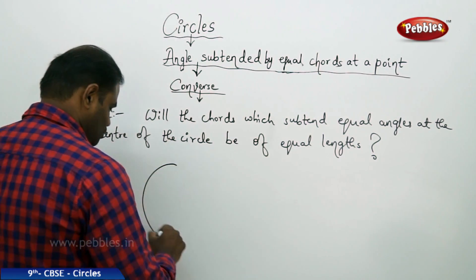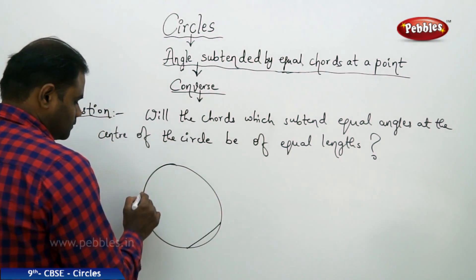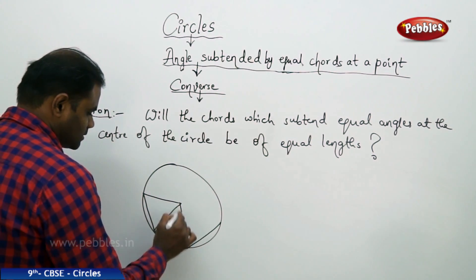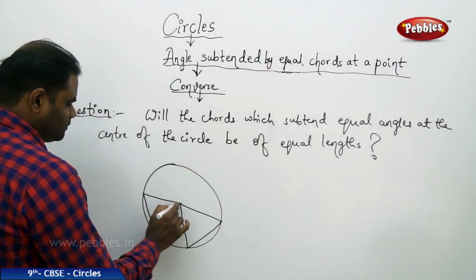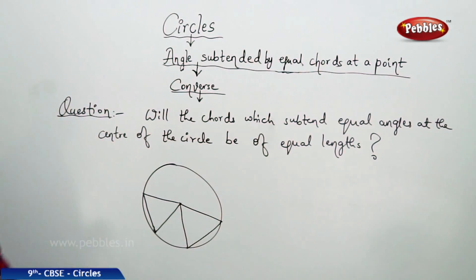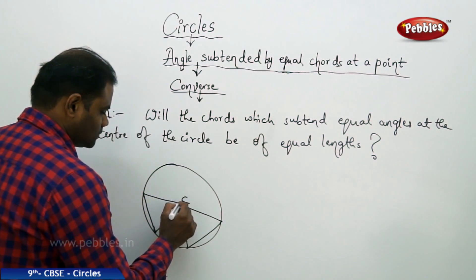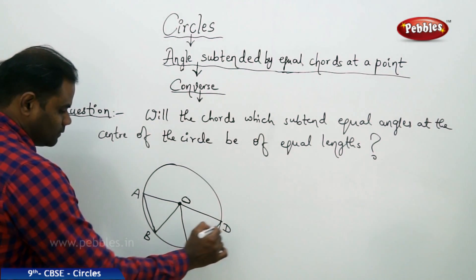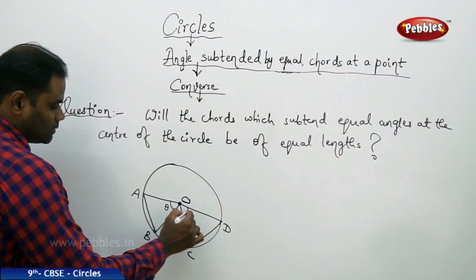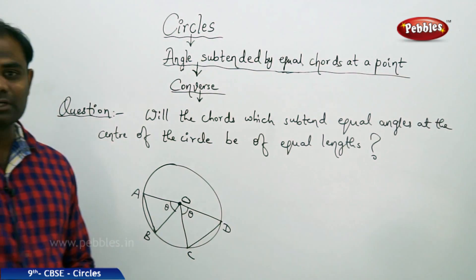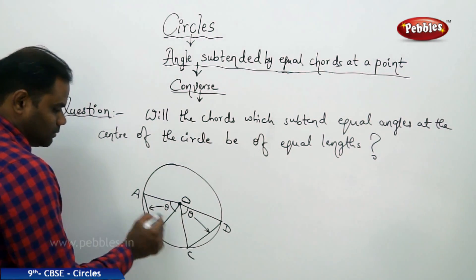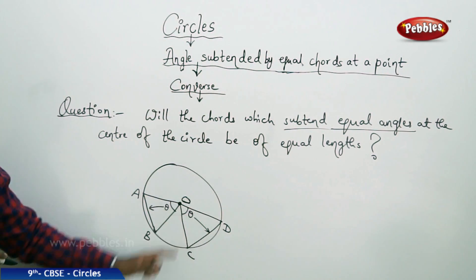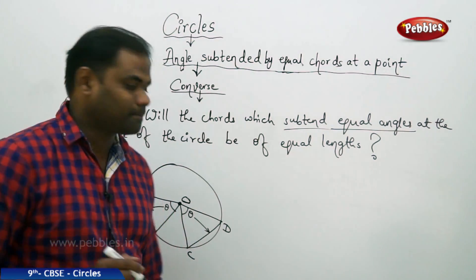If I take a circle and two chords which subtend equal angles at the center of the circle, with center O, I have chord AB and chord CD which subtend equal angles. Now, since they subtend equal angles, it is assumed in circle property that the side opposite to those angles must be equal. So because these two angles are equally subtended at center O, by the converse, the two chords must be equal.